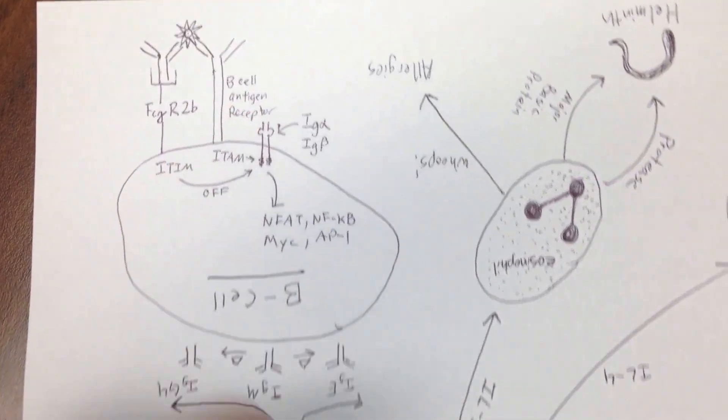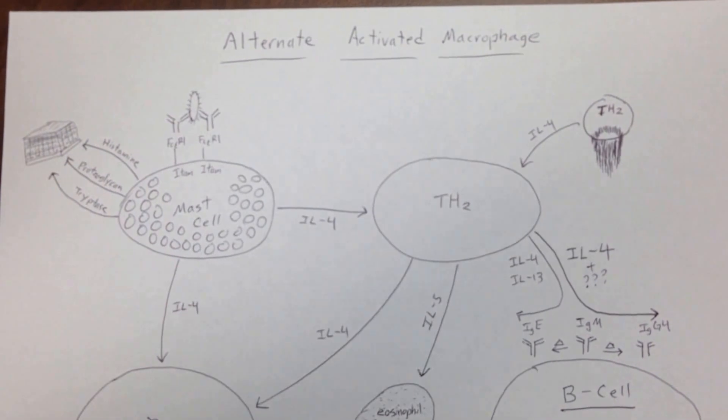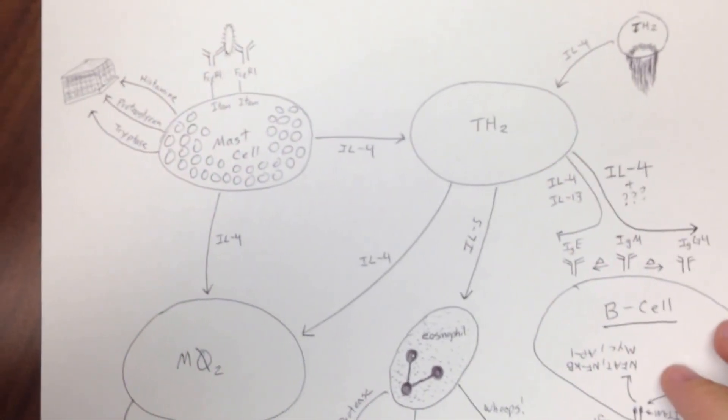So this was the alternate activated macrophage, the M2. And there's just a couple other things on another page that we're going to cover since this is all about cytokines.